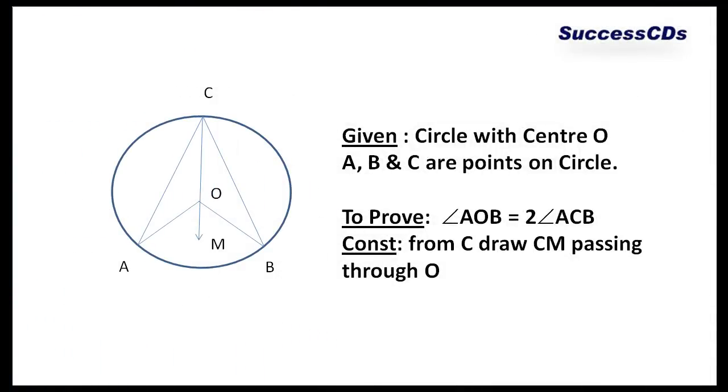Now here what we are given: a circle with center O. A, B and C are points lying on the circle. To prove, we have angle subtended by an arc at the center. If you look here carefully, angle subtended by arc AB at the center is angle AOB. This angle will be double the angle subtended by the same arc at any other point on the circle.